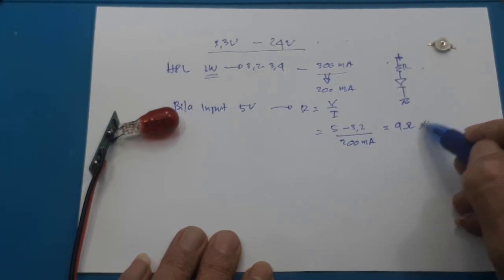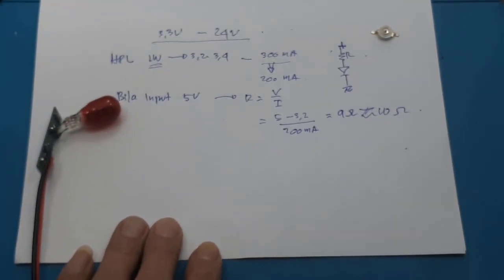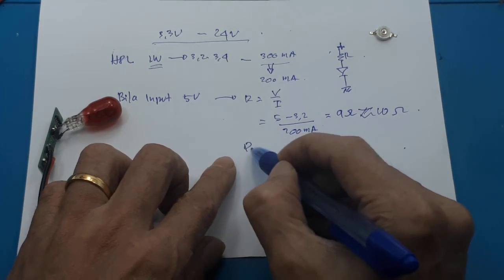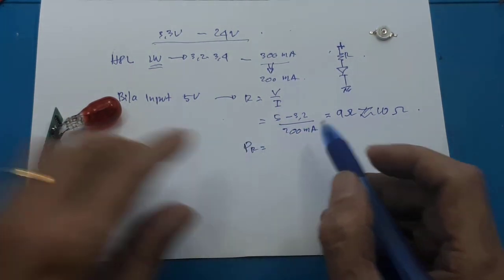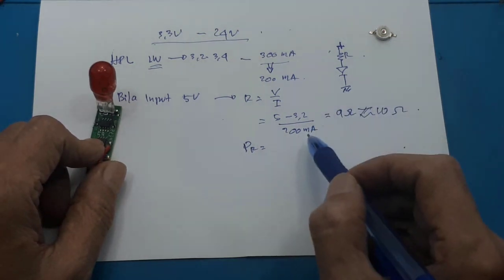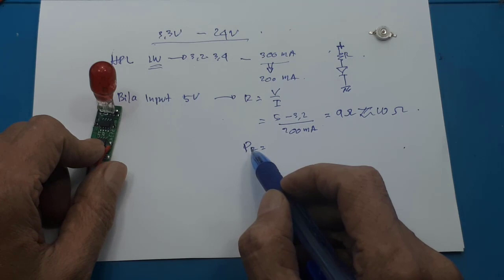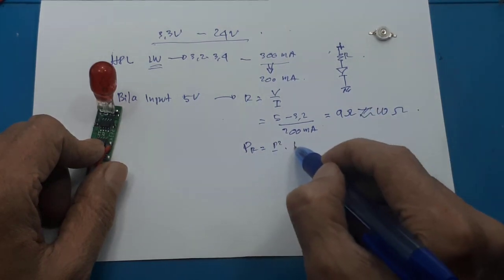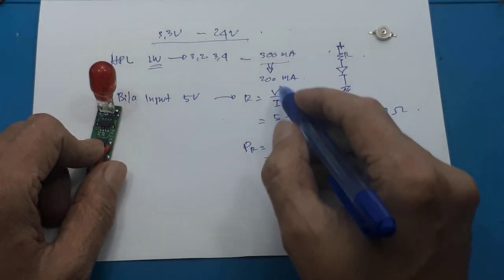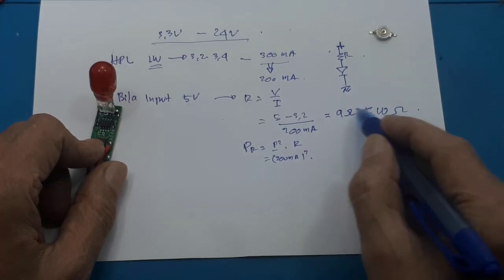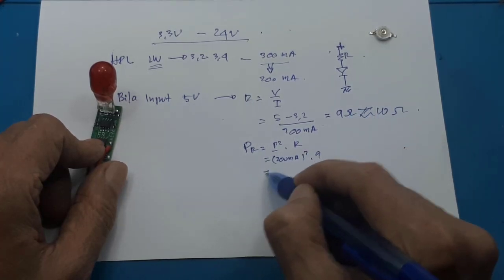Ini didapat 9 ohm. Karena tidak ada di pasaran 9 ohm, saya pasang 10 ohm. Ini biasanya mendekati 10 ohm karena untuk arus besar. Kita hitung daya pada R. Jadi P-R ini harus kalian hitung karena tergantung lampu yang kalian pasang. Jadi bila arus di atas 50 mA, daya harus kalian hitung. Jadi daya I kuadrat rumusnya dikali R. Arusnya 200 mA kuadrat dikali 9.